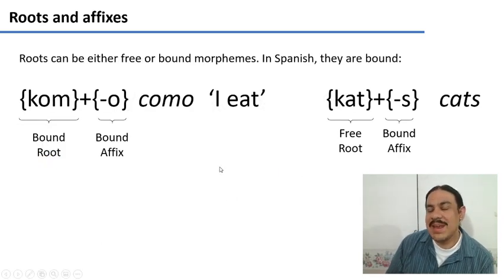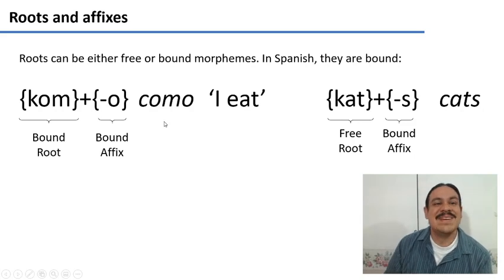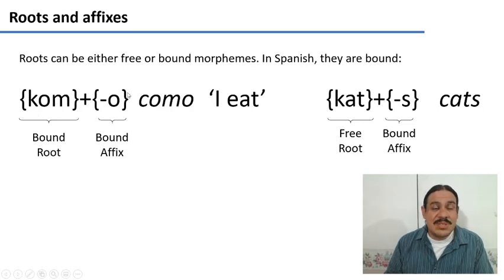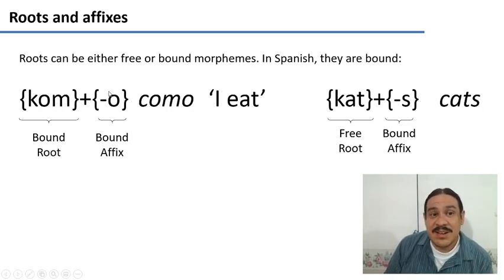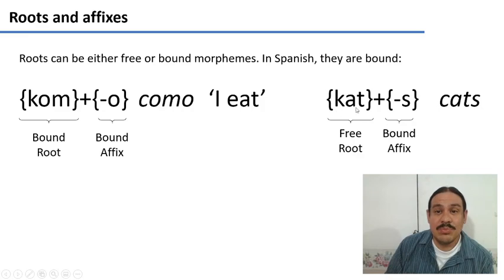In English, roots can be free morphemes — for example, 'cat' or 'dog.' They're roots and they can also exist on their own as words. However, in some languages roots are bound morphemes. For example, in Spanish we can have a word like 'como,' meaning 'I eat.' This word has a root 'com,' which means to eat, and the affix 'o,' which means I and present tense. This part tells you the root of the verb, and this one tells you the tense and who's doing the verb. But they're both bound because neither can exist on its own as a word. You can't say 'o' to mean 'I,' or 'com' to mean the verb to eat — both must be bound to one another. Whereas in English, roots can just roam around being free.